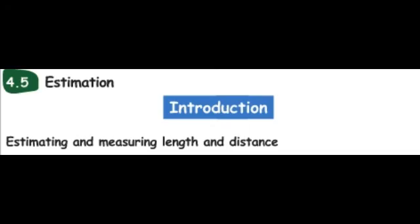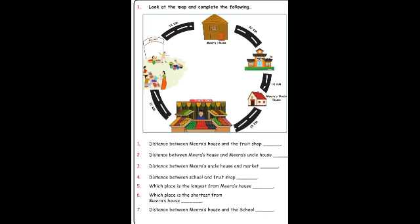Now we are going to see about estimation — estimating measuring length and distance. We can estimate some lengths and distances using approximate values for measurements. Now I will show you one map — one picture — and we will estimate the distance of the places. Look at this map and note what is given.